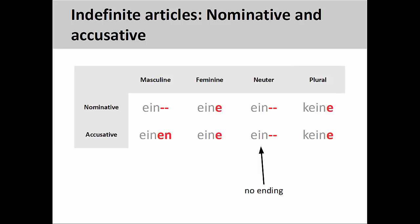Unlike the definite article pattern, however, the neuter indefinite article does not take an ending in the accusative case. This sometimes makes it difficult to determine the gender and case of the noun.